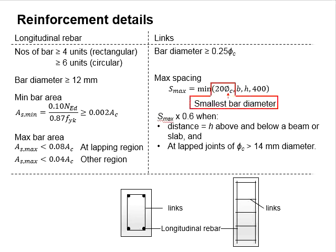This is the minimum of b, h, and 400mm. The maximum spacing is reduced to 60 percent for the regions of distance h above and below the beam, where the lapping joint of bar diameter greater than 14mm is applied. In other words, the links should be more closely spaced near the beam or slab joint.